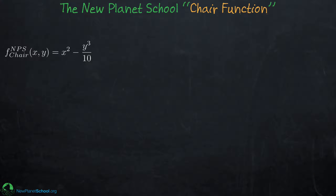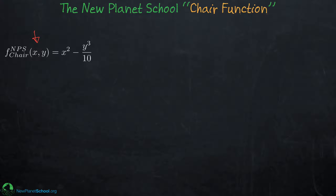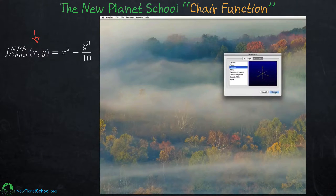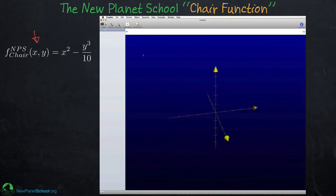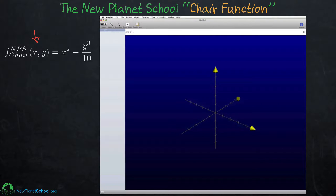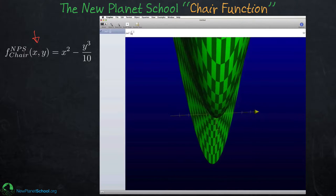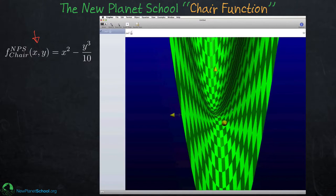Now I'll show a full customization walkthrough using what I call the New Planet School chair function, which I've written out here. This function makes something that looks like a chair. We've selected a 3D graph with a gradient background, typed in the chair function, and you can see why I call it that — it looks kind of like a chair.